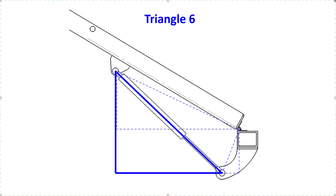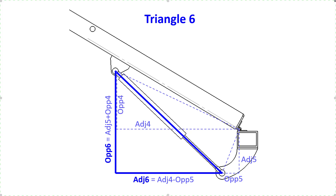Here's triangle number 6. The adjacent side can be determined by taking the adjacent side from triangle 4 and subtracting the opposite side from triangle 5. The opposite side of triangle 6 can be determined by adding the adjacent side from triangle 5 to the opposite side of triangle 4. The angle can be determined using the inverse tangent function, and the hypotenuse can be determined using the Pythagorean theorem. This hypotenuse is the length of the spring at that particular position.